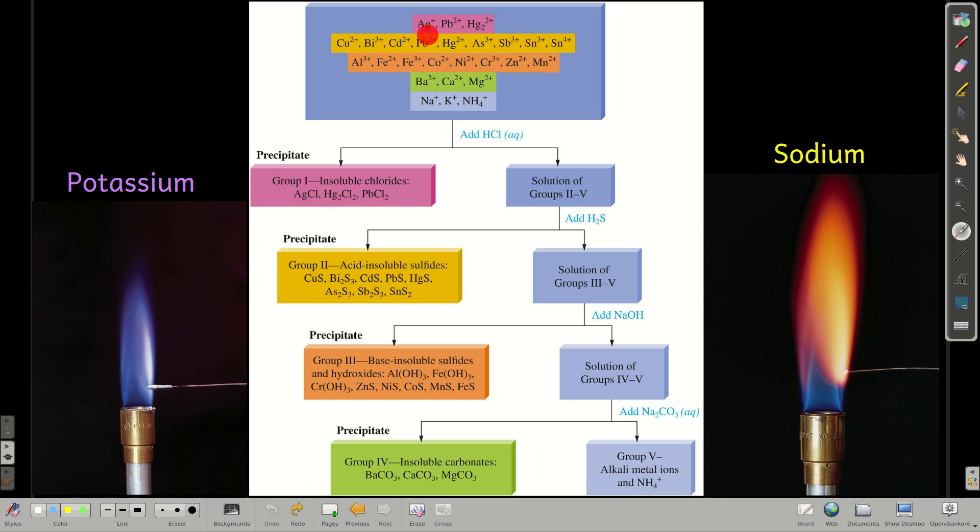Let's say we had a solution that had all of these cations in it. What we're going to talk about here is how we can separate them into groups. Group 1 contains silver, lead 2, and mercury 1. Group 2 contains copper 2, bismuth 3, et cetera. Group 4, group 5, and group 6.